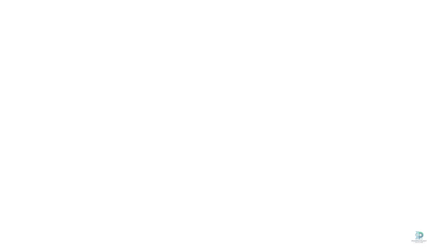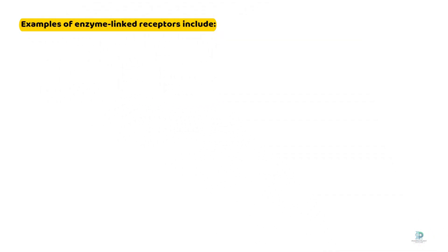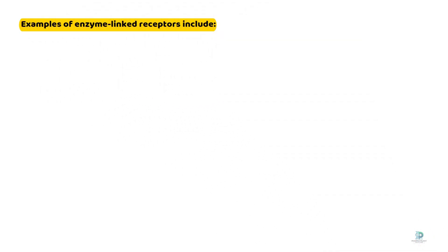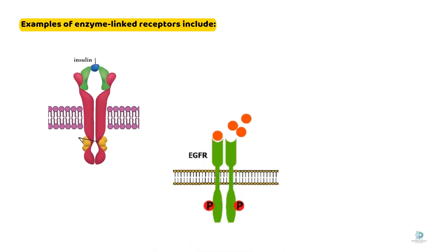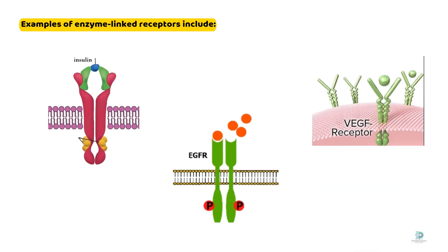Examples of enzyme-linked receptors include the insulin receptor, which regulates glucose homeostasis; the epidermal growth factor receptor, involved in cell growth and implicated in cancer; and the vascular endothelial growth factor receptor, which plays a role in angiogenesis.